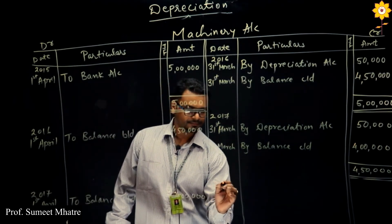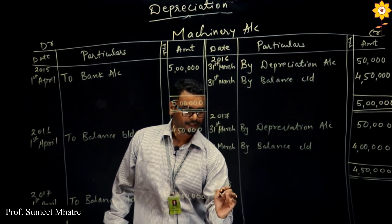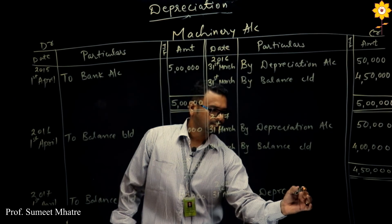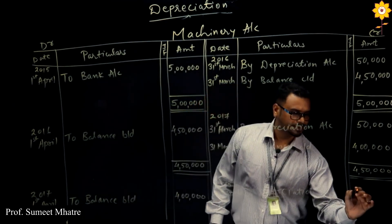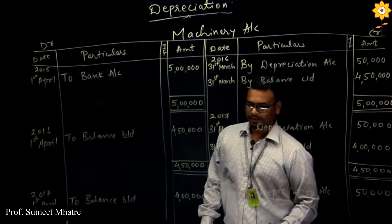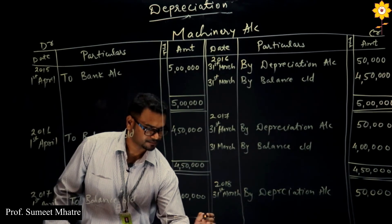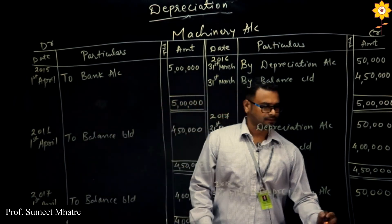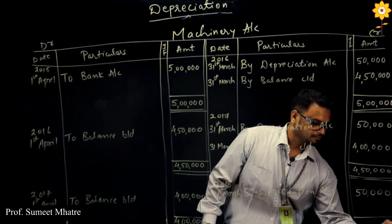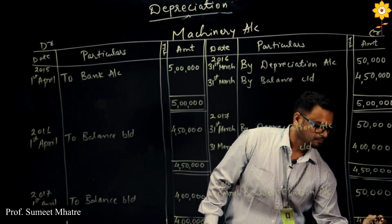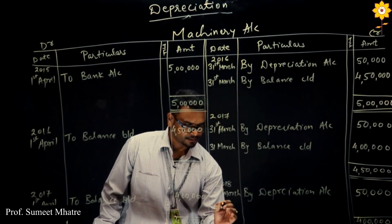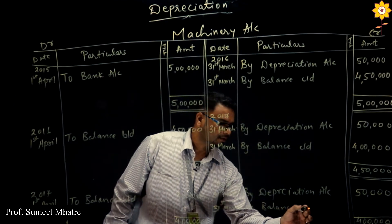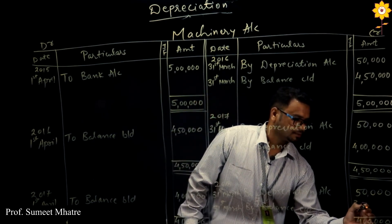For 31st March 2018, again the same amount of depreciation is deducted — that is 50,000. This is our last year. The balance for the last year from 4 lakhs, with 31st March closing, 'By Balance Carried Down' will be 3,50,000.